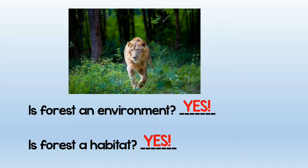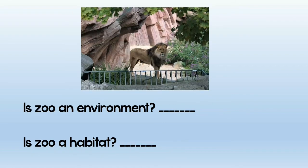Keep on watching please. Now we are going to talk about the zoo environment. Is it an environment? It is a place around the animal, so yes, it is an environment. But is it a habitat? It's not the natural place of the lion — it is made by humans. So no, this is not the habitat of the lion.